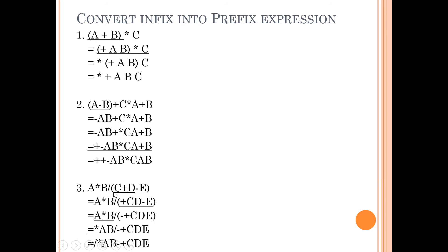Third example: a star b division c plus d minus e. Star aur division ka precedence plus aur minus se zyada hai, lekin bracket pehle solve karna hai. Bracket ke andar plus aur minus dono ka precedence same hai toh left to right — plus c d pehle, phir minus e. Ab star aur division bache — dono ka precedence same hai toh left to right — pehle star: star a b. Phir division aage put karna hai aur baaki as-is. Yeh tha prefix.